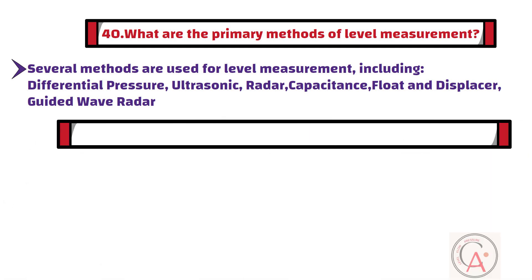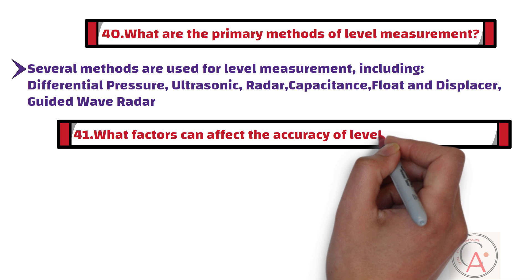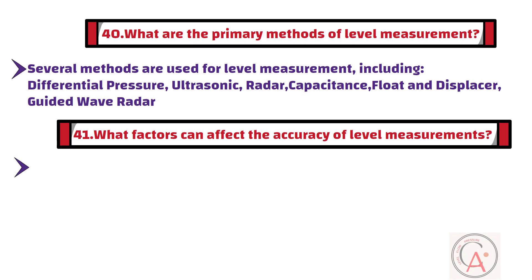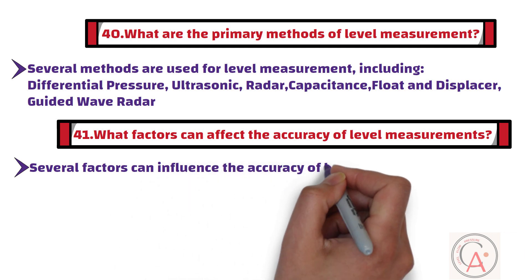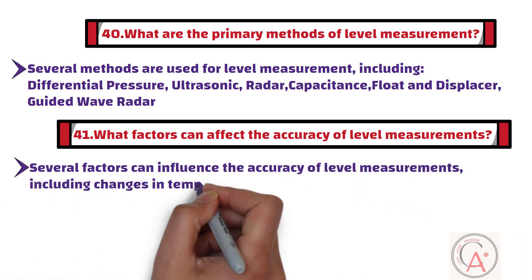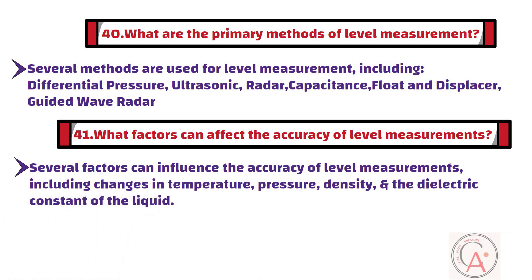Question 41: What factors can affect the accuracy of level measurements? Several factors can influence the accuracy of level measurements, including changes in temperature, pressure, density, and the dielectric constant of the liquid. The vessel's geometry and the presence of foam or turbulence can also affect measurement accuracy.